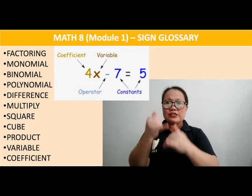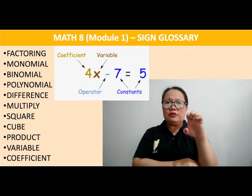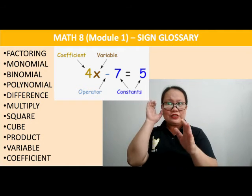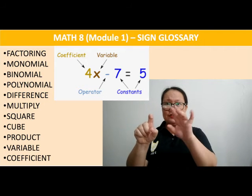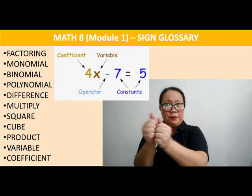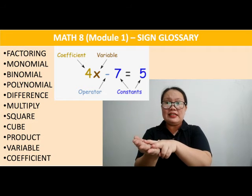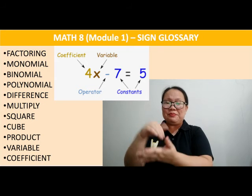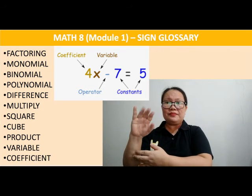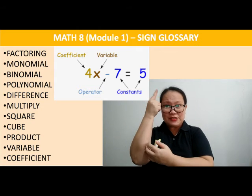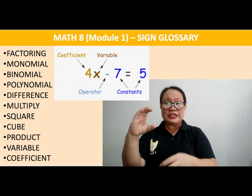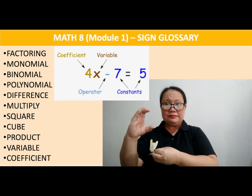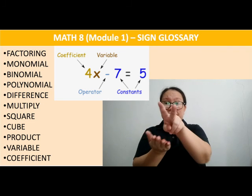Now for the last word, we have the COEFFICIENT. As you can see on the picture: 4x minus 7 equals 5. The 4, the partner of the variable, is the coefficient. So coefficient and variable are partners. The number is the coefficient. The letter is the variable.